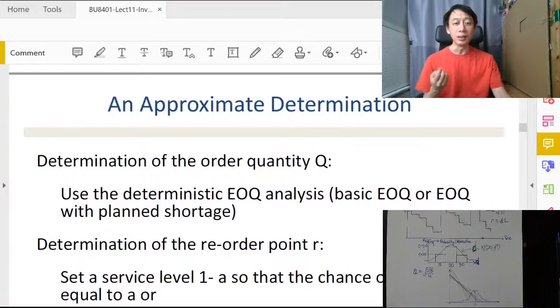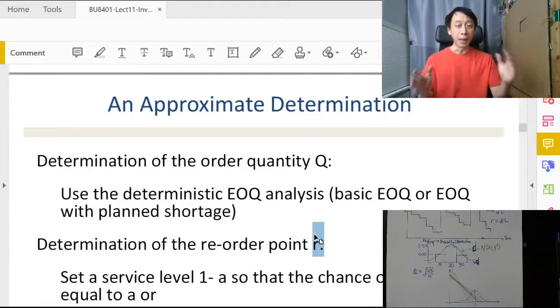Next we come to the other number about continuous review. So how many to order, use EOQ formula. When to order, and that has got to do with determining the reorder point. What is the R for our continuous review policy? So that's the main idea that we are going to explore a little bit now.